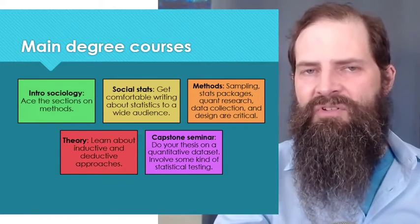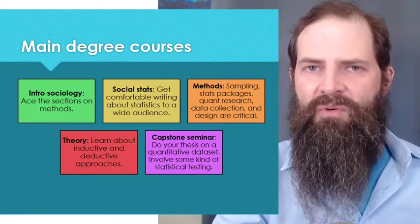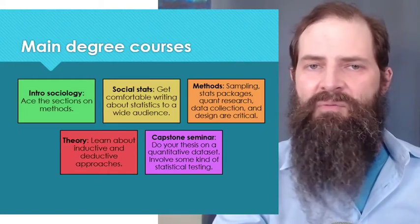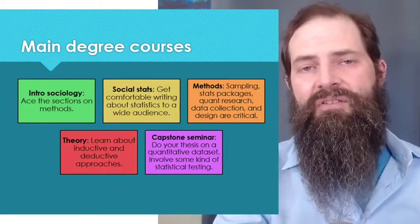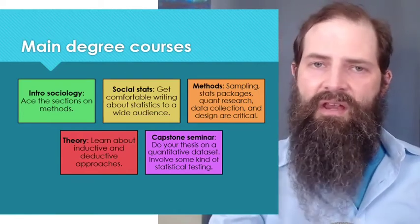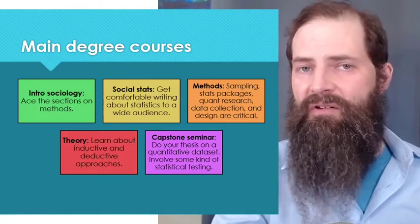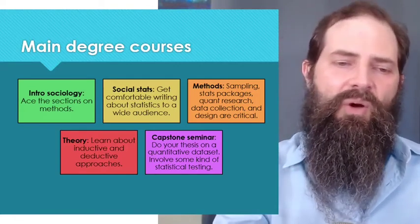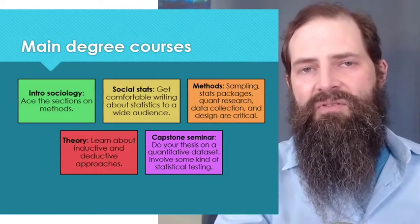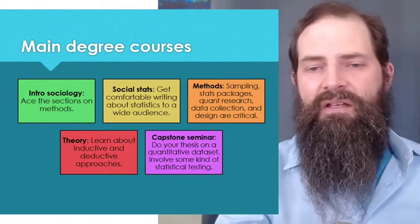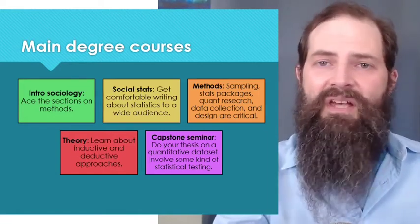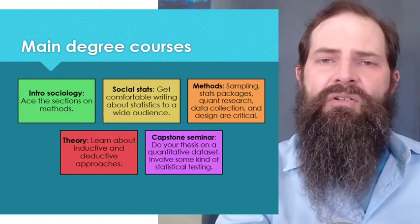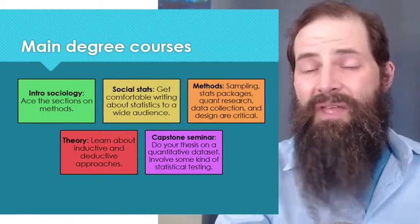In your social stats or quantitative research class, you'll really start to get to work with data. Start learning a statistical package and start learning to write about data for wide audiences — not everyone will know what Cronbach's Alpha is, so you need to be able to explain it clearly. In your research methods class, that's where your bread and butter is. You must make an A. Study sampling, quantitative research, and statistical packages like R or SPSS. Learn data collection, how to design your own survey, how to assess the quality of someone else's data, and how to understand research design — all critical for data analysis jobs.